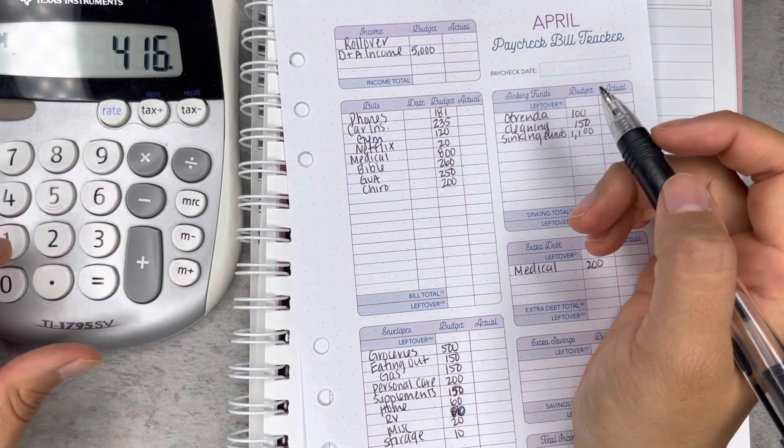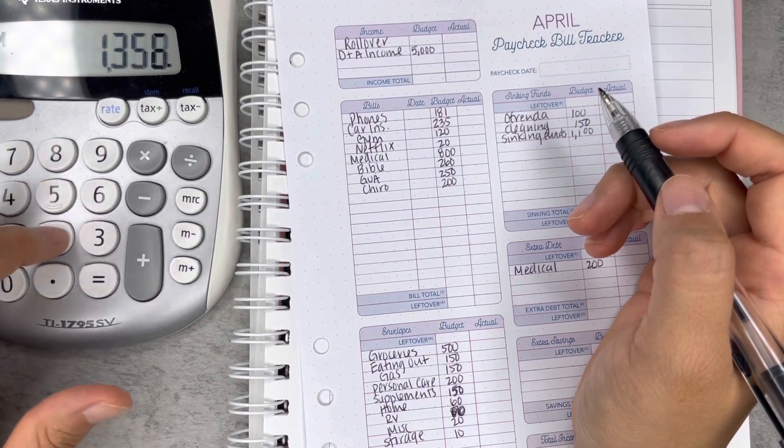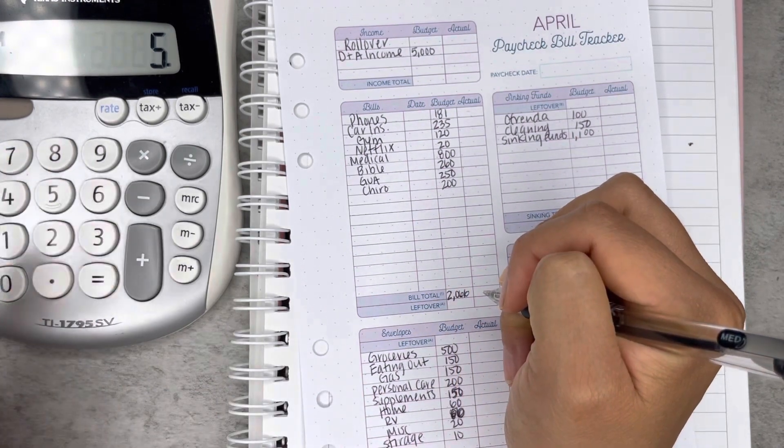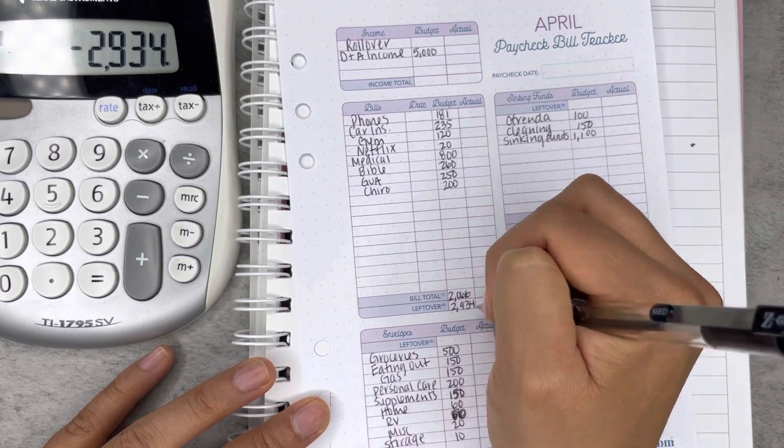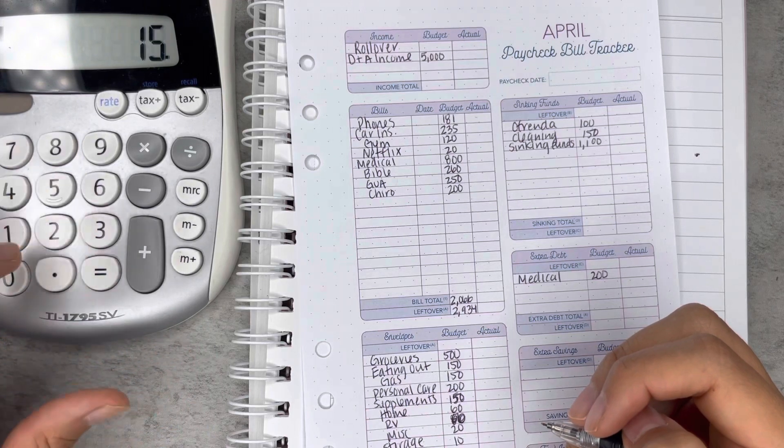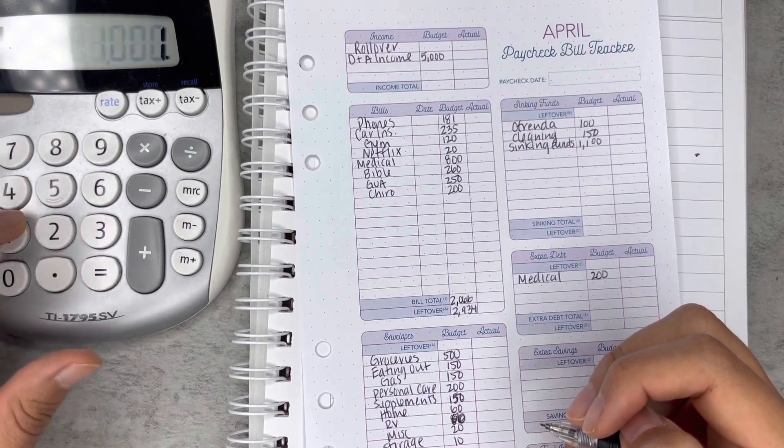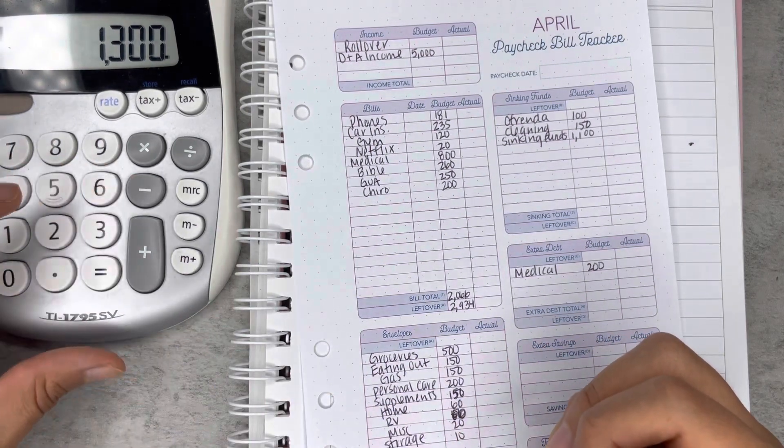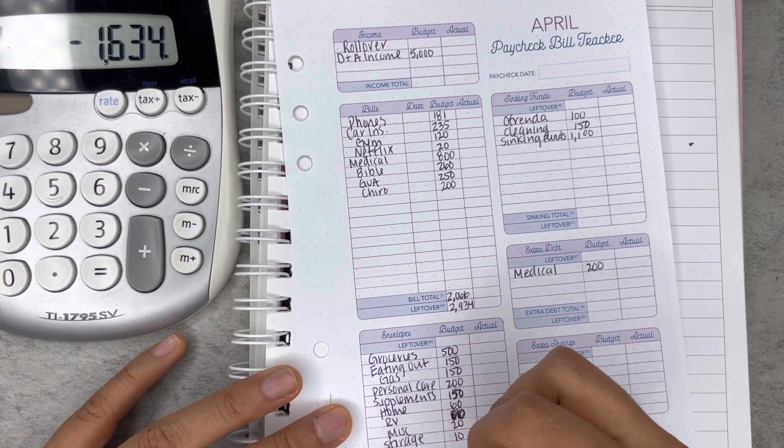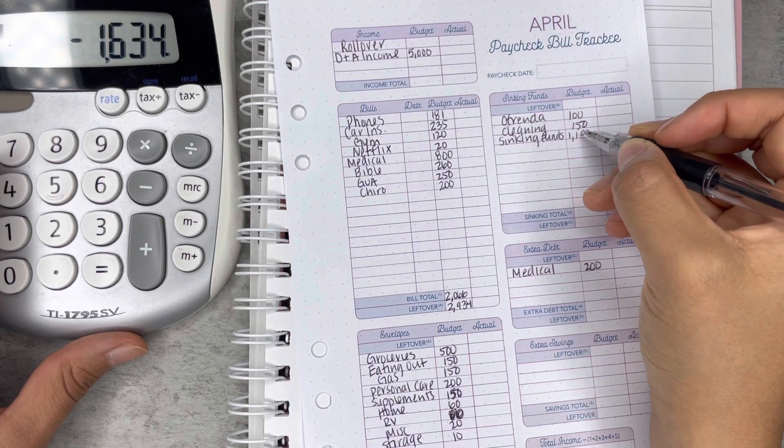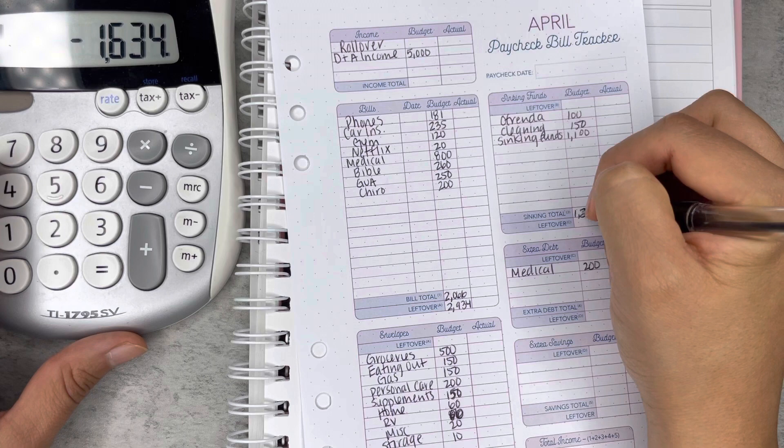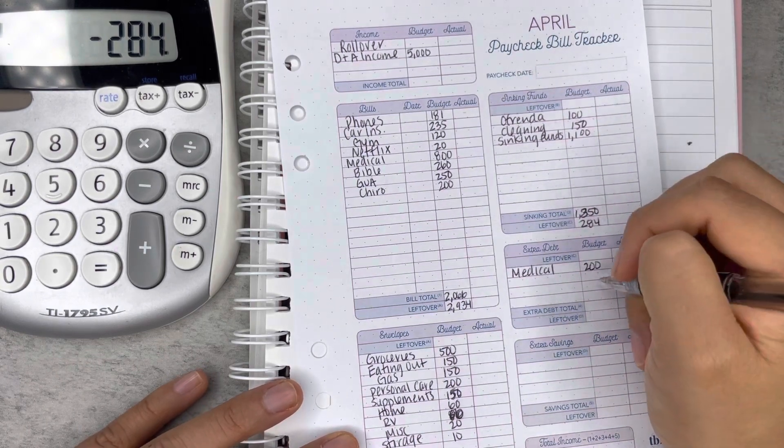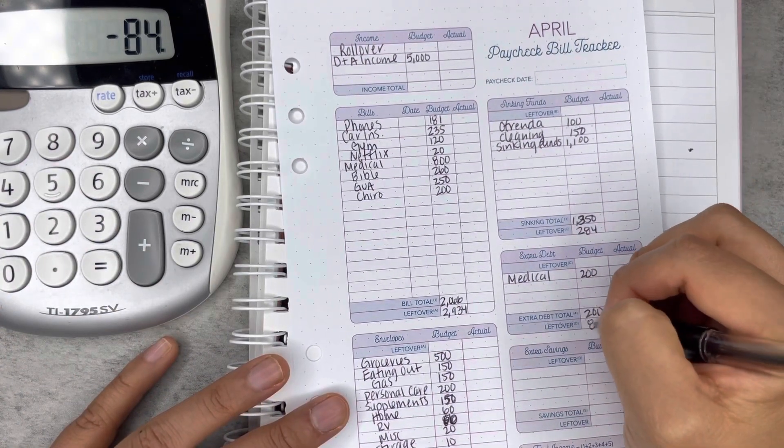So let's add this up. $181 plus $235 plus $120 plus $20 plus $800 plus $260 plus $250 plus $200. We're at $2,066. So we would have left over $2,934. And then over here, I'm going to do, or it adds up to $1,300 minus $2,934. We're at $1,634. Over here we're at $1,200, $350. So $1,300, $350. So then we were left with $284. So here's $200. So at the end of the month we would be left with $84.